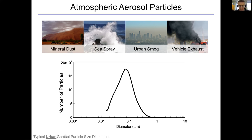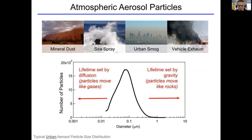This histogram shows the number of particles at a given size. Particles tend to peak around 100 nanometers. Things much smaller than 100 nanometers act almost like gases — they move by diffusion and collide with larger particles, getting lost from the atmosphere. Things that are bigger are removed by gravity and move like rocks. So particles that are really small or really big have short lifetimes, and you end up with these particles around 100 nanometers.